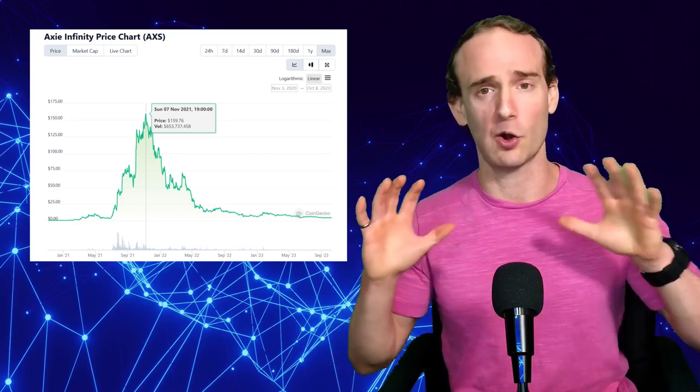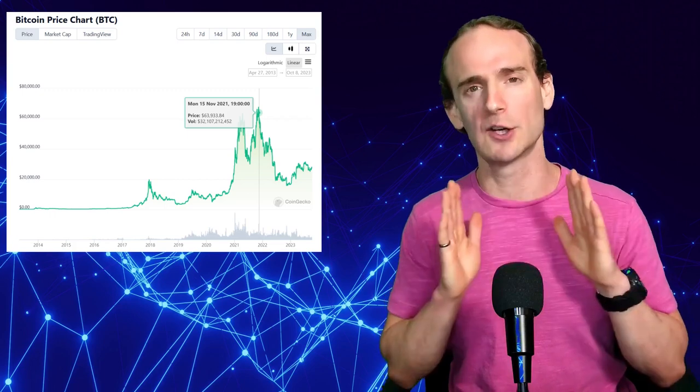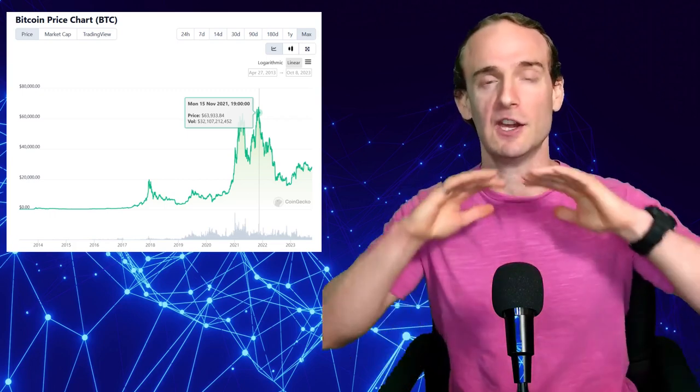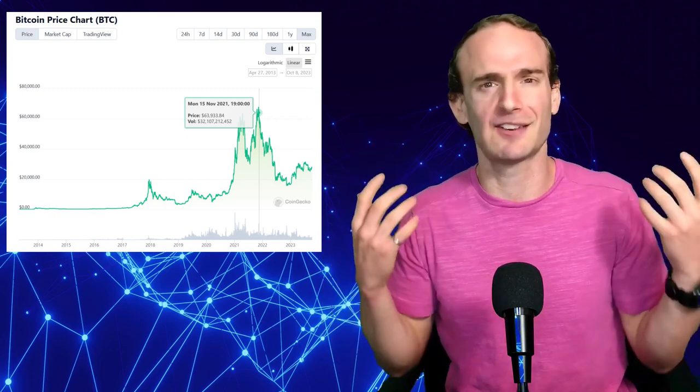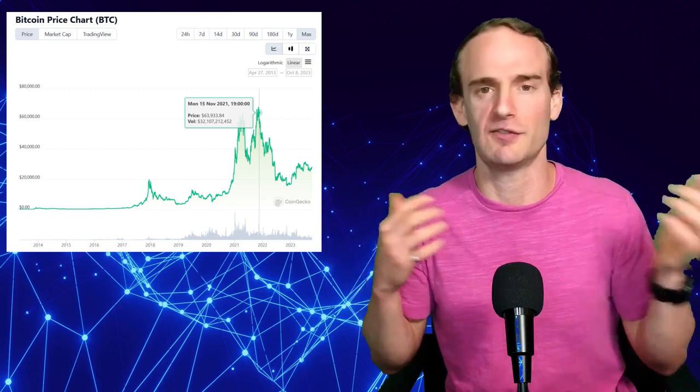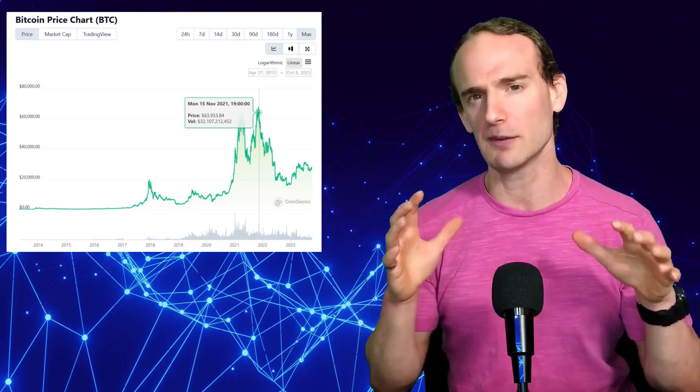So the market as a whole has rejected NFTs and people are going to say, well, it's just a crypto bear market. Everything is down. But that's not necessarily the case. If we look at Bitcoin, which is widely regarded as a proxy for the broad crypto market, think of it as the S&P 500 of the crypto market. If we look at Bitcoin, at its peak, it was in the mid $60,000s, somewhere around $65,000.